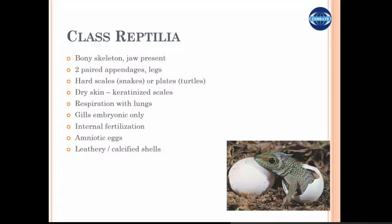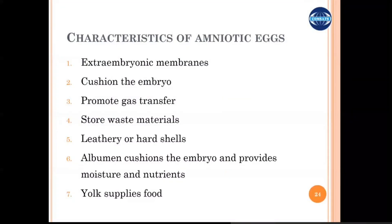The egg has extra-embryonic membranes — structures found around the egg and embryo. These provide a proper cushion and protection to the embryo, gaseous transfer support by specialized membranes, and storage structures for waste materials. Compare this to fish eggs, which are laid in water and in direct contact with the external environment, so they can diffuse waste materials straight into the water and get oxygen and nutrients from the water.